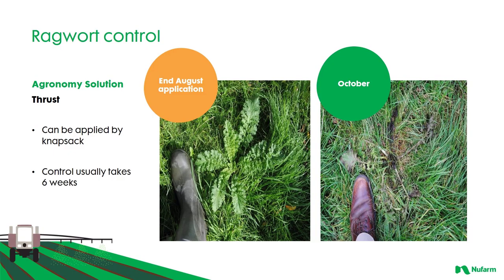Looking at Thrust for ragwort control — Thrust can be applied via knapsack and control usually takes six weeks. In our illustration, we have a photograph of a trial we conducted: ragwort at end-of-August application, and this is the result in October — a nicely senesced plant.